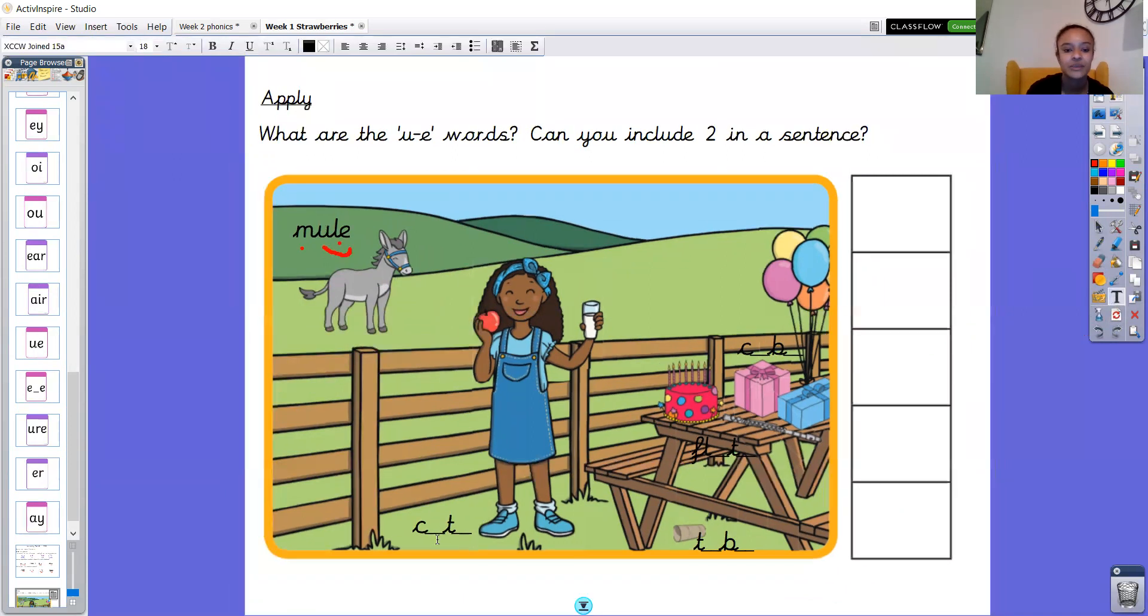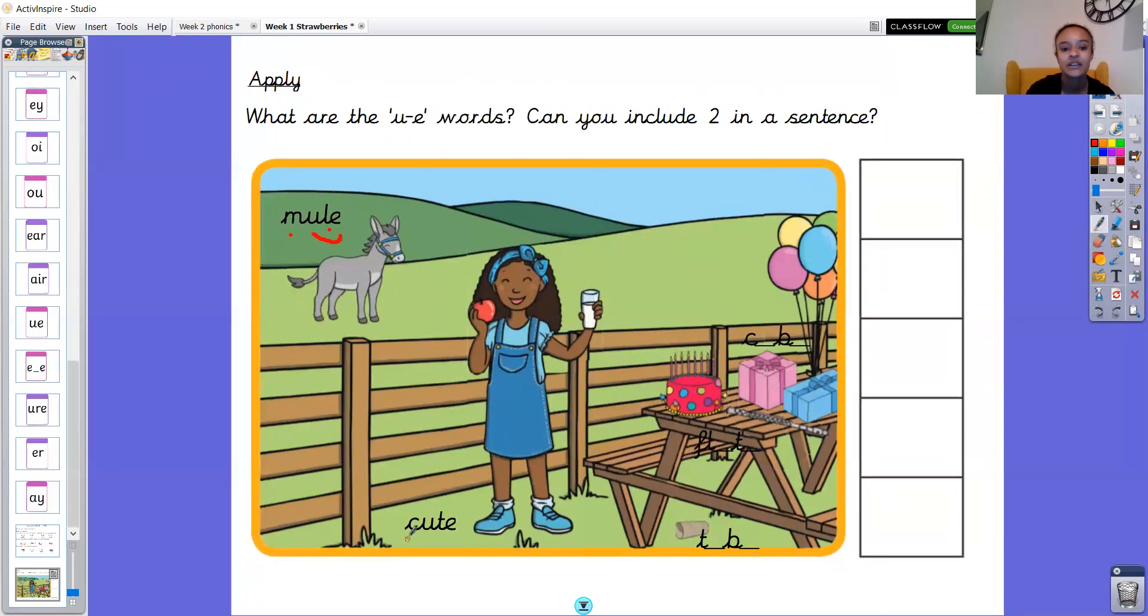If you add, it's quite hard to tell from the picture what it's supposed to be, but if you add in the split diagraph, you get the word cute, don't you? We've just looked at this one. Cute, and I guess she looks cute is what they mean by that.